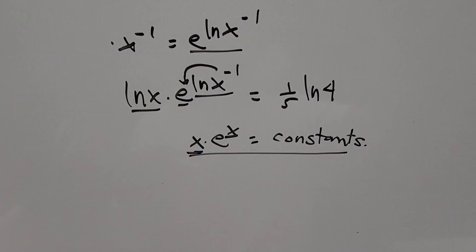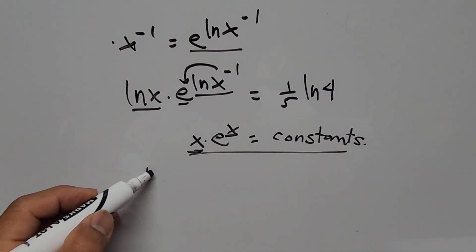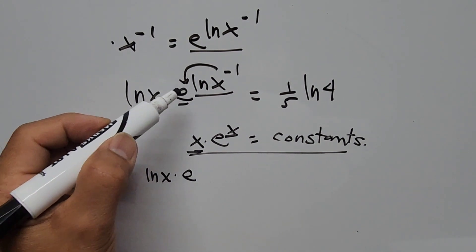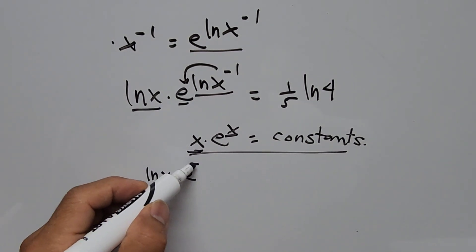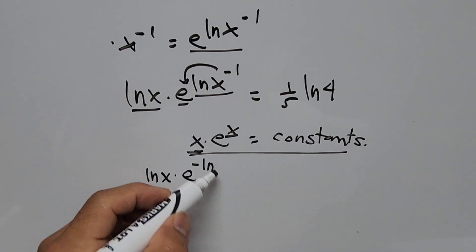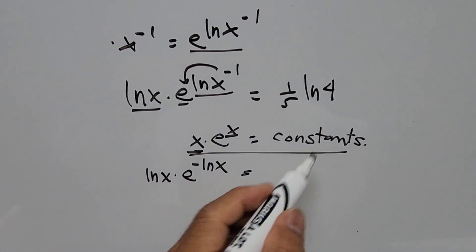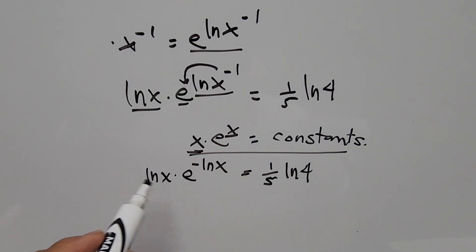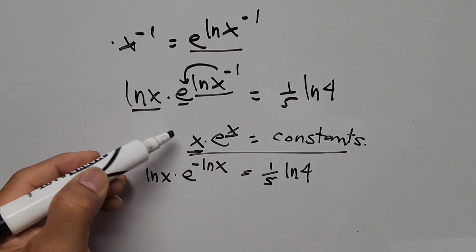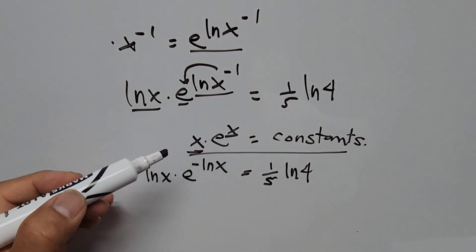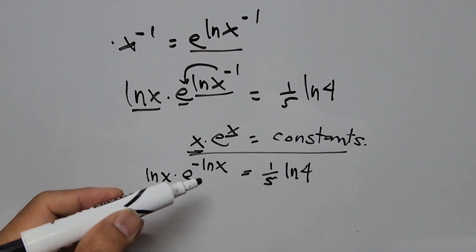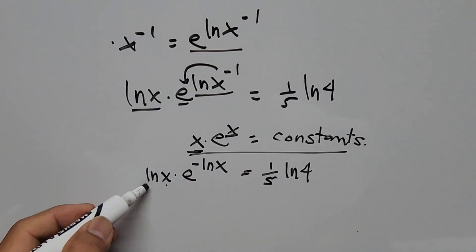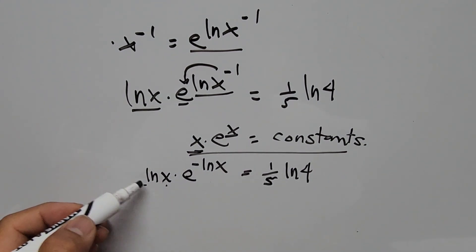Our equation now becomes ln of x times e to the power of negative ln of x equals one-fifth times ln of 4. We have the target format x times e to the power of x, where x is in the form of negative ln of x. However, the base must match its exponent — the base is missing a negative sign to match the exponent negative ln of x.